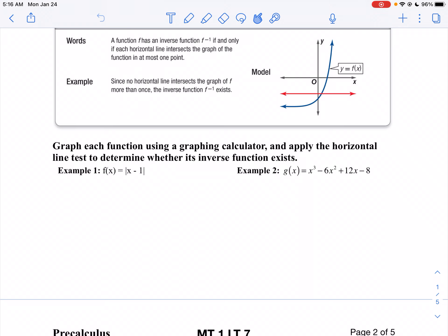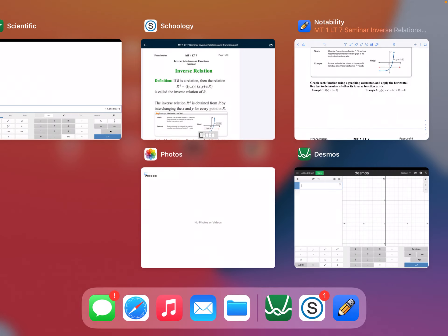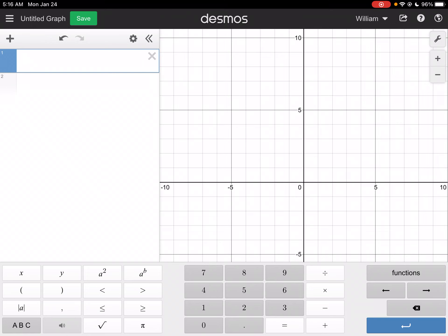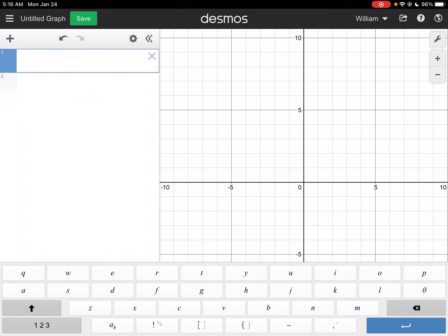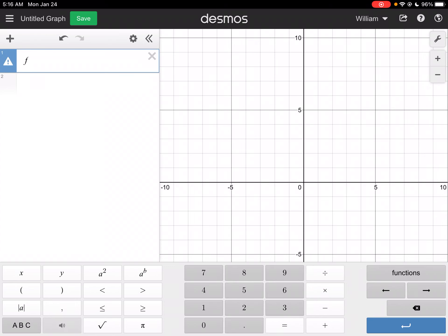So I'm going to graph f of x equals the absolute value of x minus 1. The directions say use a graphing calculator. We could probably do this without, but we'll do f of x equals the absolute value of x minus 1.